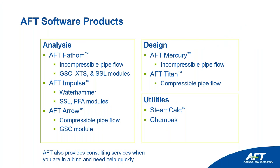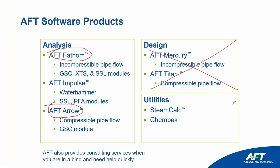Our primary software products are AFT Fathom, AFT Impulse, and AFT Arrow. I won't discuss these much today, but once the automated network sizing module is available for AFT Fathom and AFT Arrow, Mercury and Titan will go away because all of their capability is being integrated, expanded, and streamlined into Fathom and Arrow as a new add-on module.